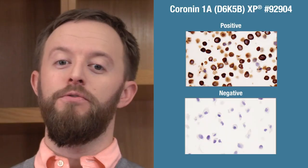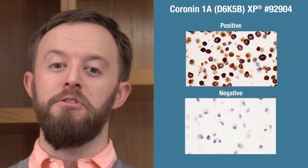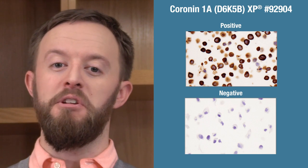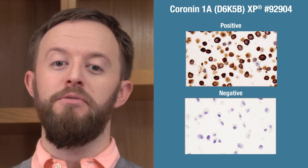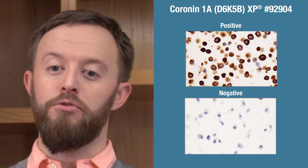Today I'm going to talk about one type of IHC control: cell pellets. Formalin-fixed, paraffin-embedded cells can be easily obtained and are convenient as both positive and negative controls.